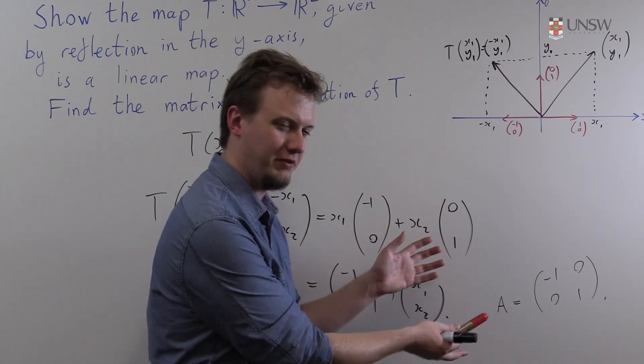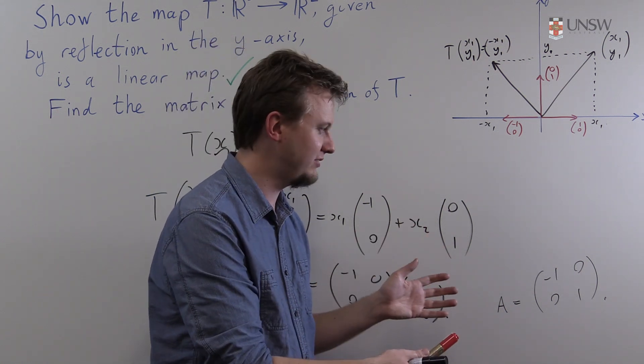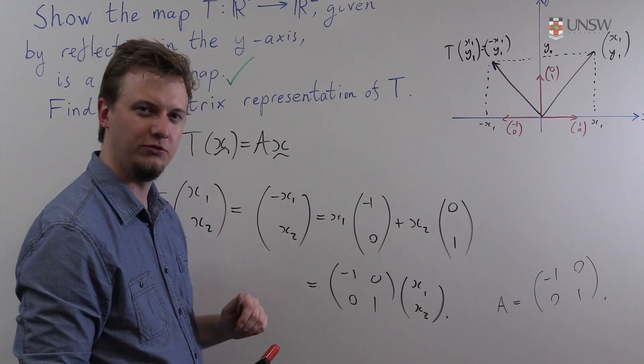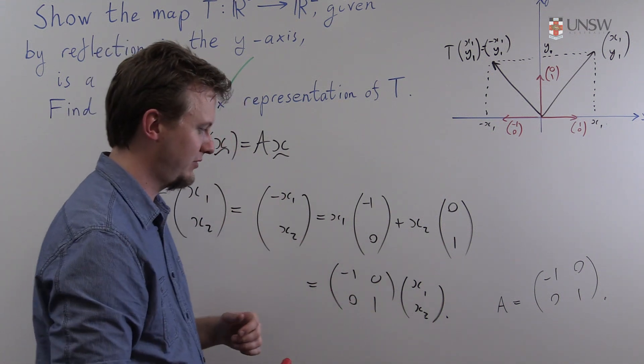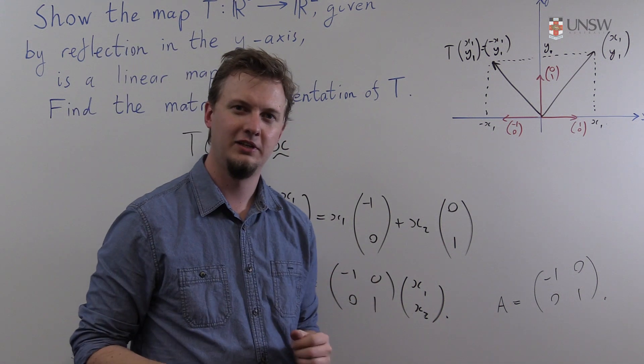So yes we could have found this matrix using the matrix representation theorem or maybe we can just look at what the map is doing and just write out the matrix straight away. And thanks for watching.